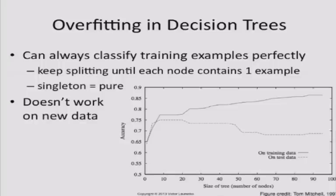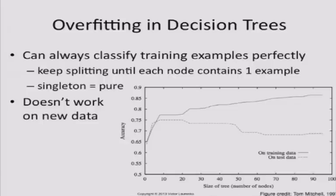As the decision tree keeps splitting, the tree gets bigger and bigger. As it gets bigger, it becomes more and more accurate on the training data, but at some point it will become less accurate on data you haven't seen before — the future data. Here's a typical example: this axis is accuracy, and this is the depth or number of nodes in the tree. The performance on training data keeps rising as you split more, until it hits one. But if you measure performance on testing data, it keeps rising at first, but then it actually starts dropping. This is overfitting — your algorithm becomes too specific to the training data and cannot generalize well to new examples.